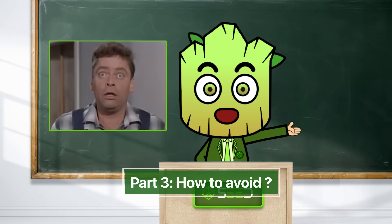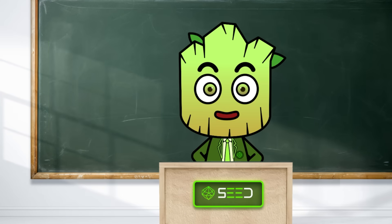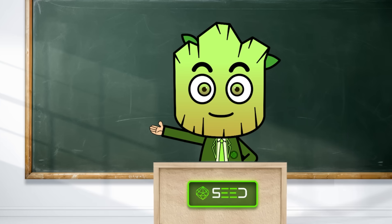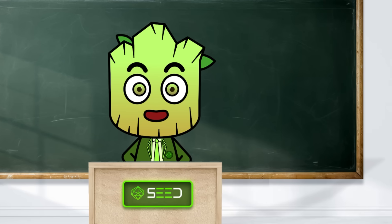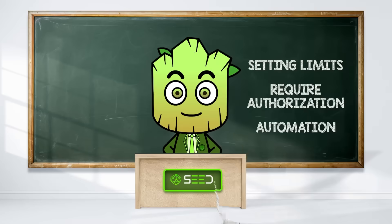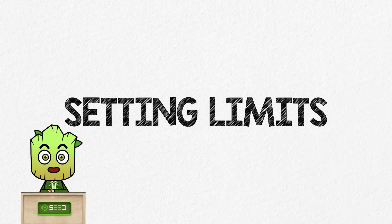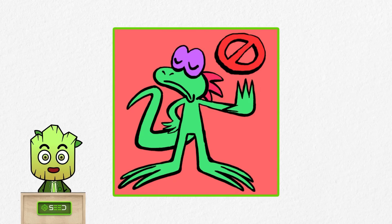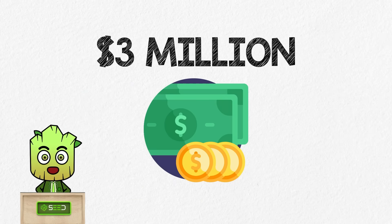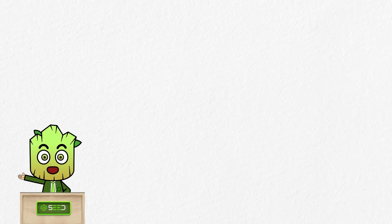Fat finger errors cause a lot of problems, not only for experienced crypto users but especially for newcomers. How can you avoid them? Let's dive into three key processes: setting limits, authorization, and automation. First, setting limits on trading platforms can help — for example, a system could block trades over a certain dollar amount, such as $3 million, to prevent accidental large orders.